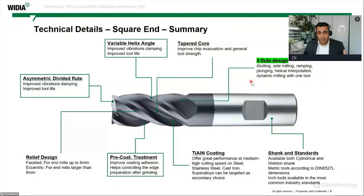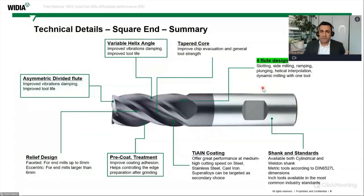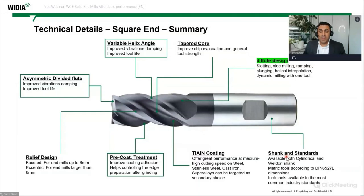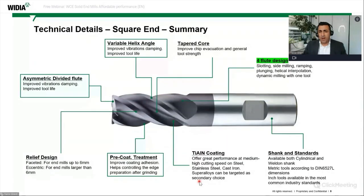For the four-flute, the tool is perfect for slotting, side milling, ramping, plunging, helical interpolation, and of course dynamic milling — so you can do everything with one tool, which is very flexible. For shanks, we have a cylindric shank and Weldon shank — standard shanks used in manufacturing. On top, we have a titanium aluminum nitride (TiAlN) coating, which gives perfect performance and avoids wear when working with steel, stainless steel, cast iron, and super alloys as a secondary choice.